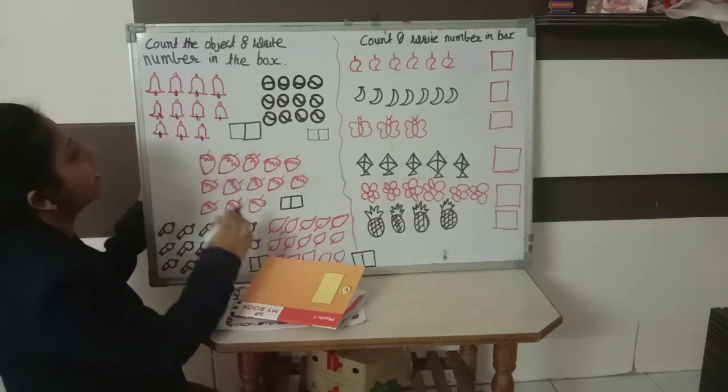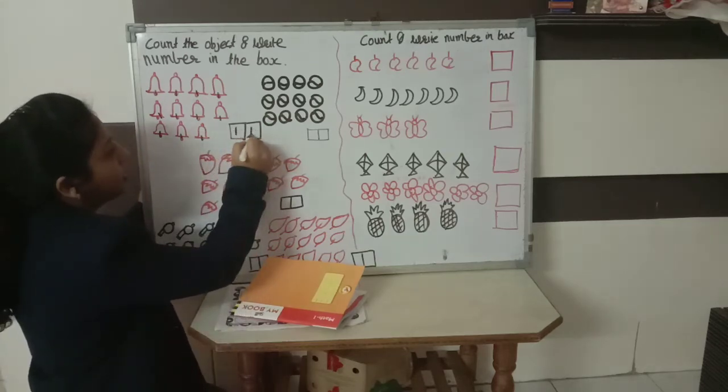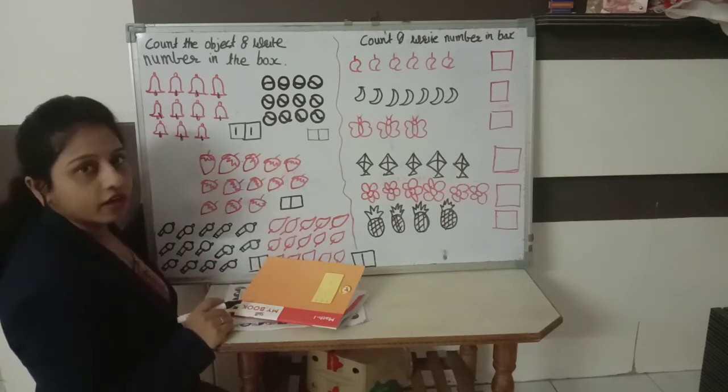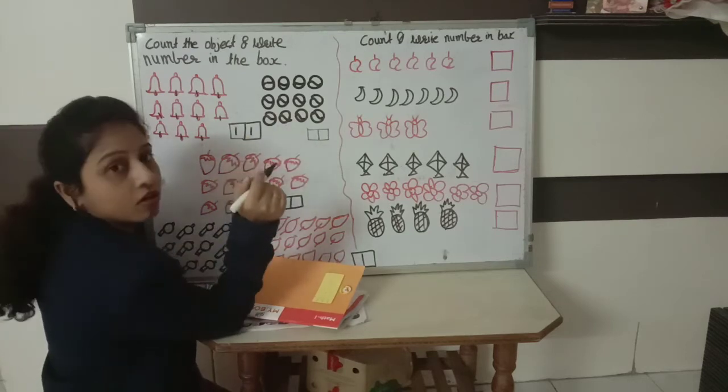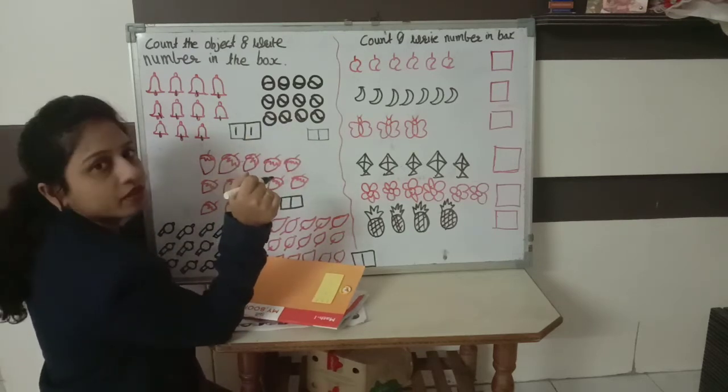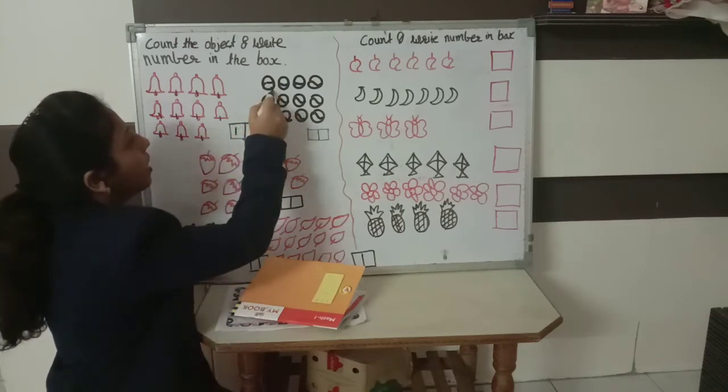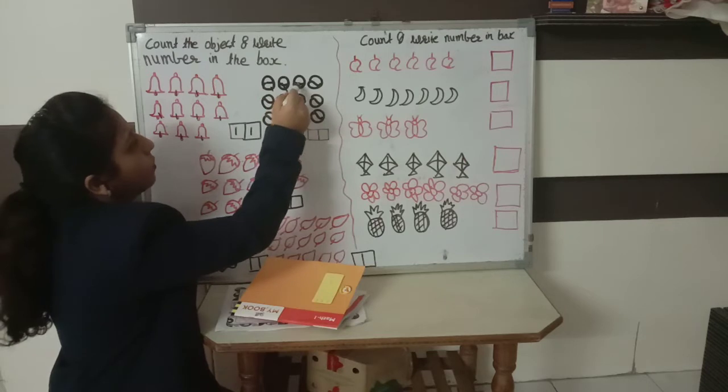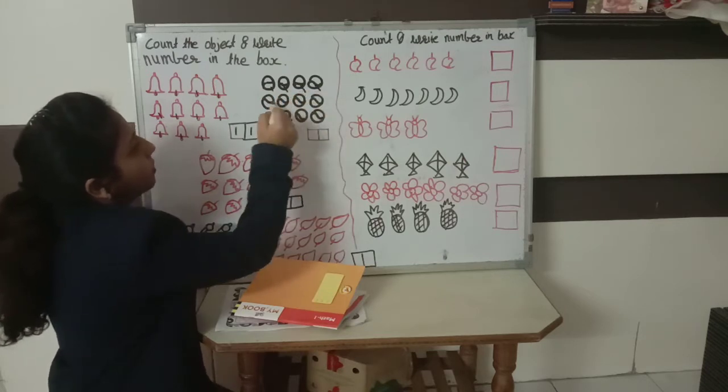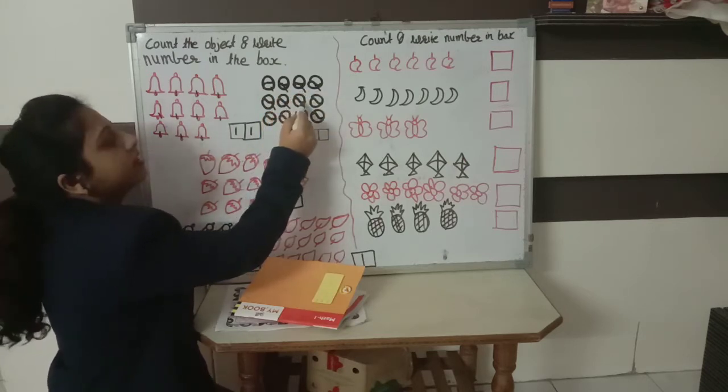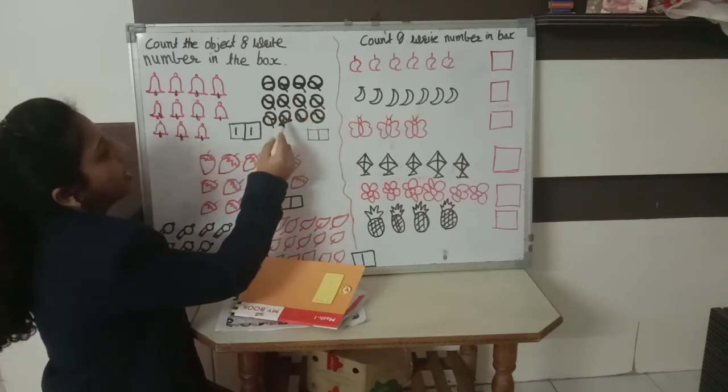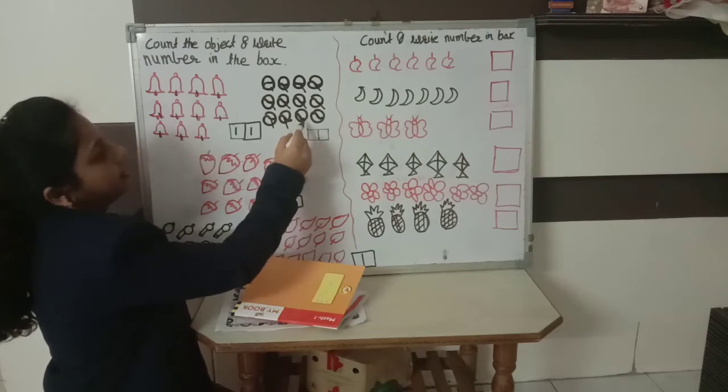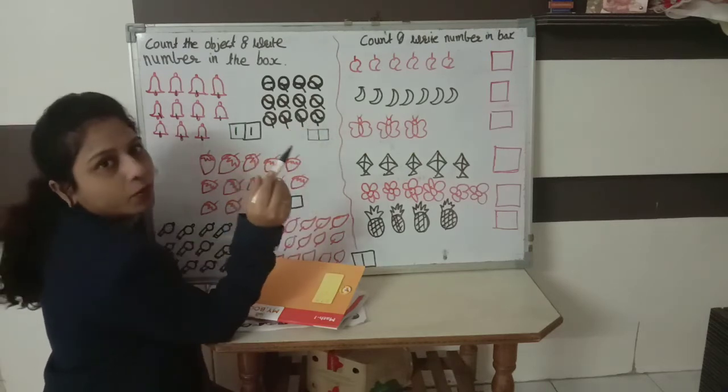How to write 11? Number 1, 1, 11. Okay, yes. Now we are going to count balls. How many balls are there? How many balls are here? Let's count. 1, count and count, okay. 2, 3, 4, 5, 6, 7, 8, 9, 10, 11 and 12.